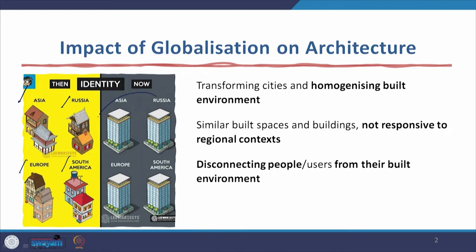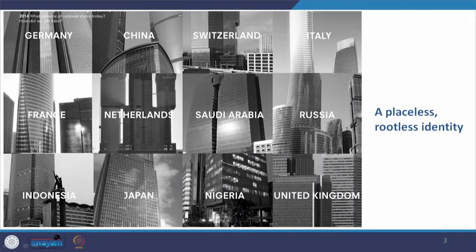Then, because of modernism, architecture became homogenized. The advantages of modernism notwithstanding — that it brought functional, better buildings suited for industrial society — these buildings still had a rootless, placeless identity. When you look at them, you do not know whether they are in Asia, South America, or Europe. So modernism disconnected people from their built environment.